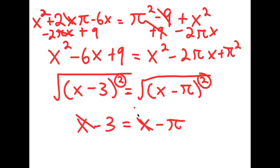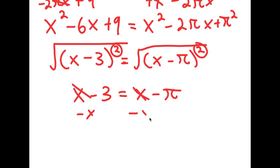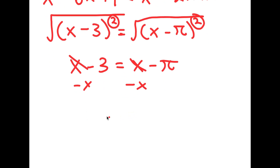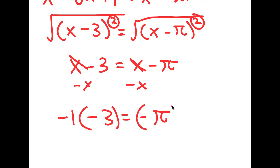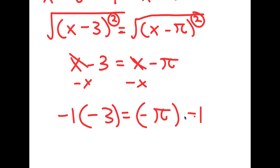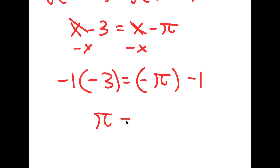So I get x minus 3 is equal to x minus pi. Now I'm going to cancel these two x's by subtracting x on both sides, so I get negative 3 is equal to negative pi. And if I multiply both sides by negative 1, I get pi is equal to 3. So there you have it — I just proved that pi is equal to 3.